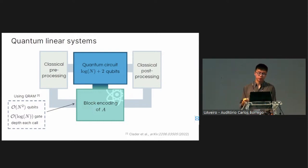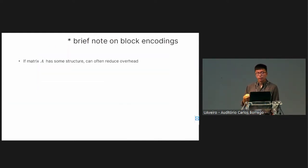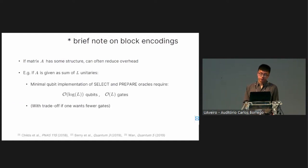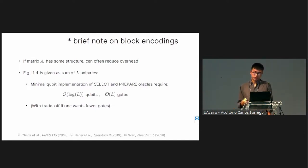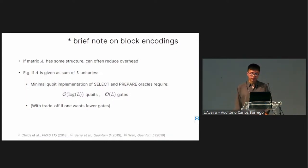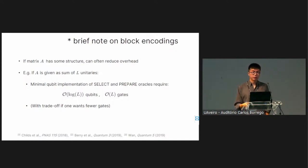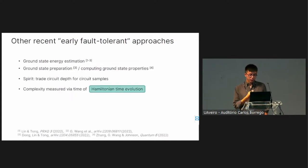That said, with a heavy asterisk: if matrix A has structure we can exploit it. For instance, if A is given as a sum of L unitaries with manageable L, we can use select-and-prepare oracles and get away with only O(log L) qubits, incurring an extra O(L) in gate depth. Nevertheless this is still an additional resource we'd want to reduce, especially in an early fault-tolerant setting.